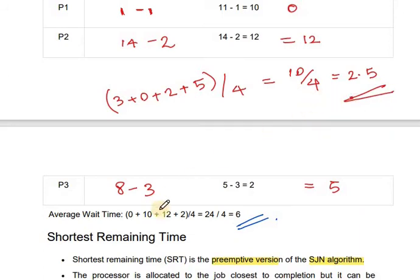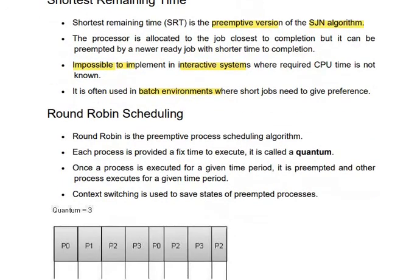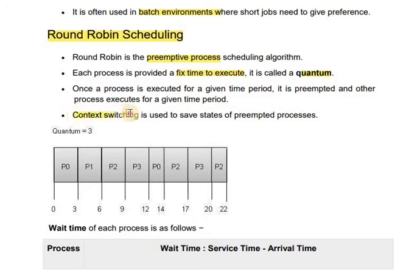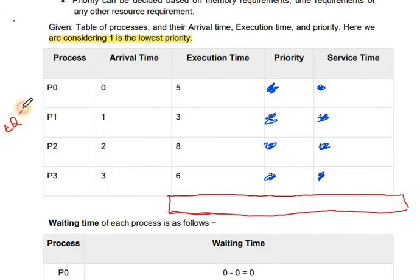Comparing with the previous algorithm — priority-based scheduling — the average waiting time here is lower. Next comes the Round Robin scheduling algorithm. Round Robin is a preemptive process. Each process is provided a fixed time to execute, which is called a quantum. Once the quantum expires, the next process enters. Consider the same example with time quantum equal to 2.